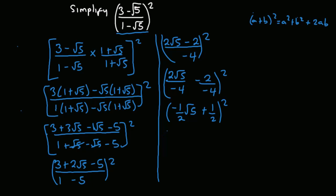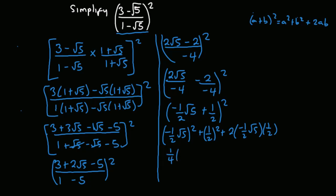Simplifying: negative (1/2) root 5, all squared, gives (1/4) times 5, which is 5/4. Then (1/2) squared gives 1/4. For the 2ab term, we have 2 times negative (1/2) root 5 times (1/2). The 2 and the two halves cancel, leaving negative root 5 over 2.